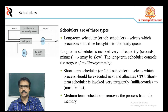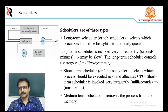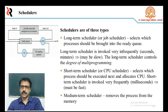A process may be in one of two states: running state or not running state. When a new process is created by the operating system, it enters the system in the running state. Processes that are not running are kept in a queue waiting their turn to execute. Each entry in the queue is a pointer to a particular process, and the queue is implemented using a linked list. A dispatcher is also used.